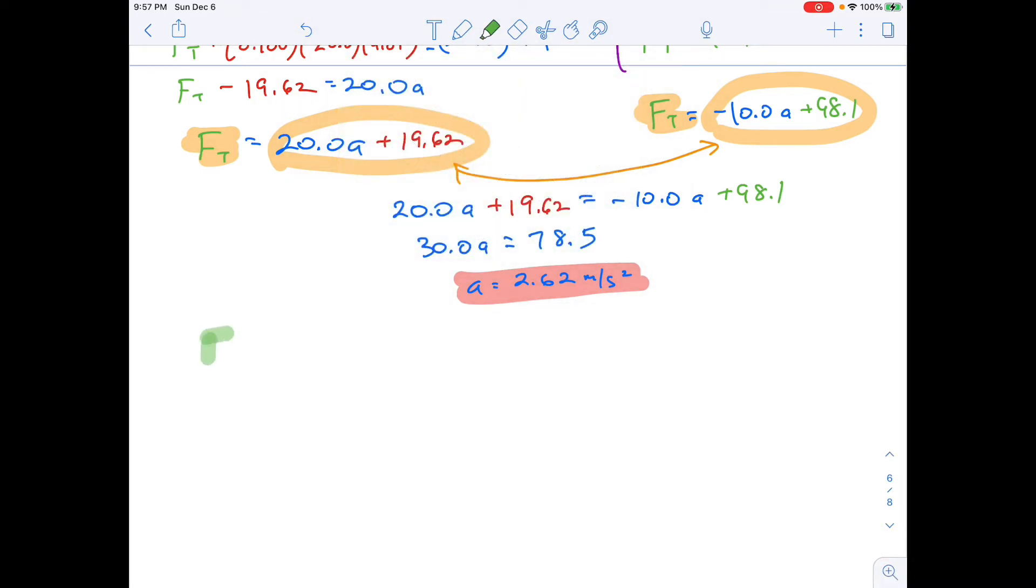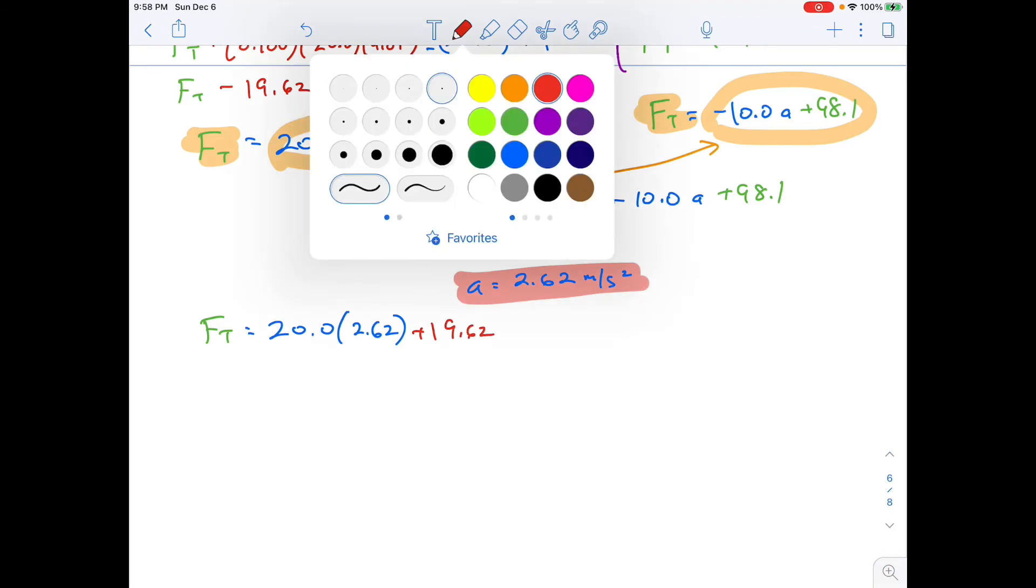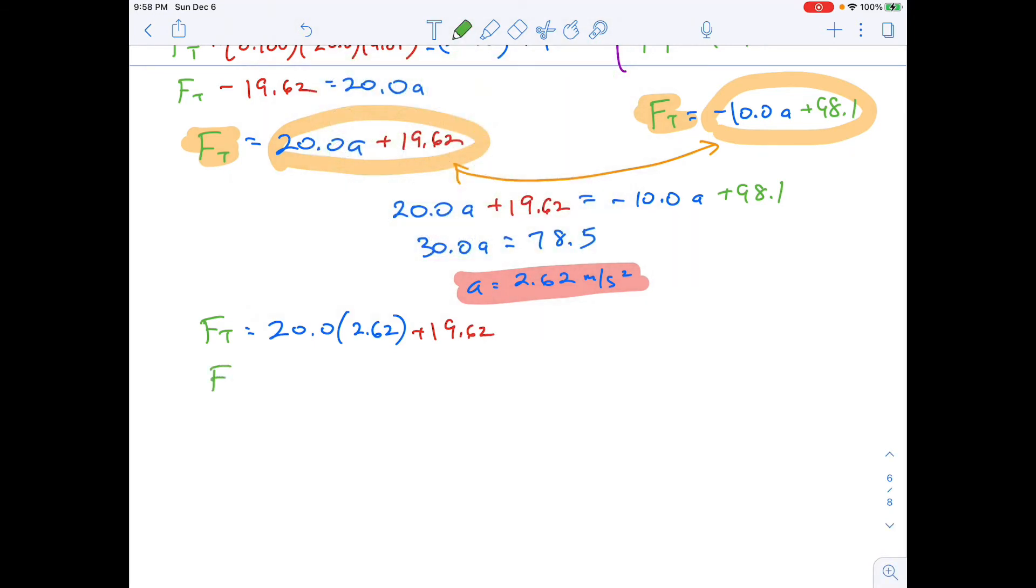So plug this value into either of the other two formulas, and it should work. I can do FT equals 20.0 times 2.62 plus the 19. I'll be consistent and take it all the way home with the color coding. I probably could have dropped it by now. And if I solve this, FT equals